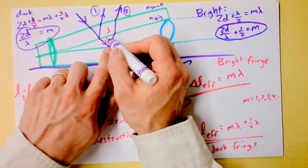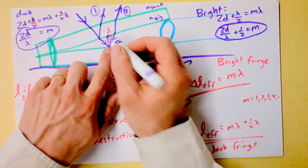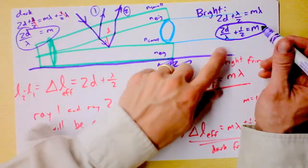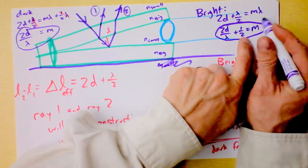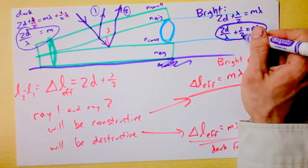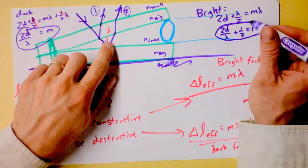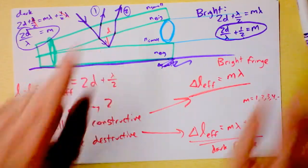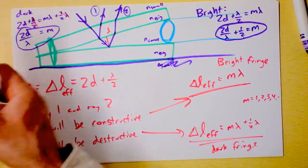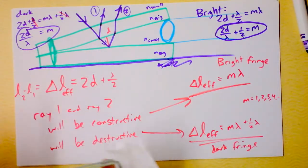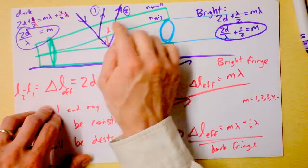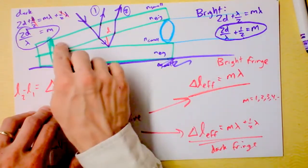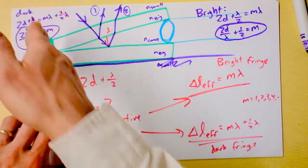For a bright fringe, I need an additional half-wavelength change to get the rays back into phase. So as d increases moving across the air wedge, I should get a series of bright fringe, dark fringe, bright fringe, dark fringe, alternating like lines as I move across in that direction.